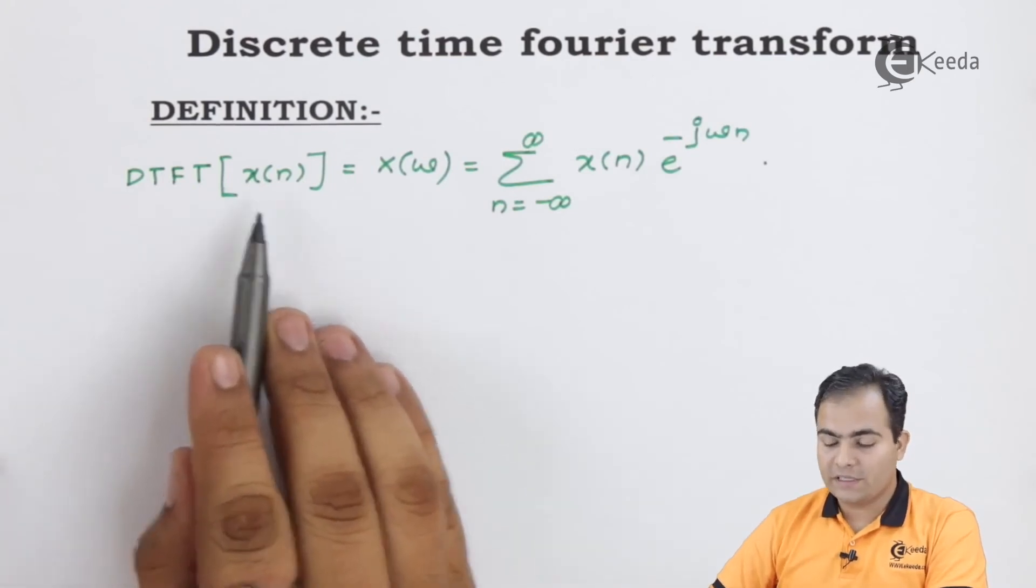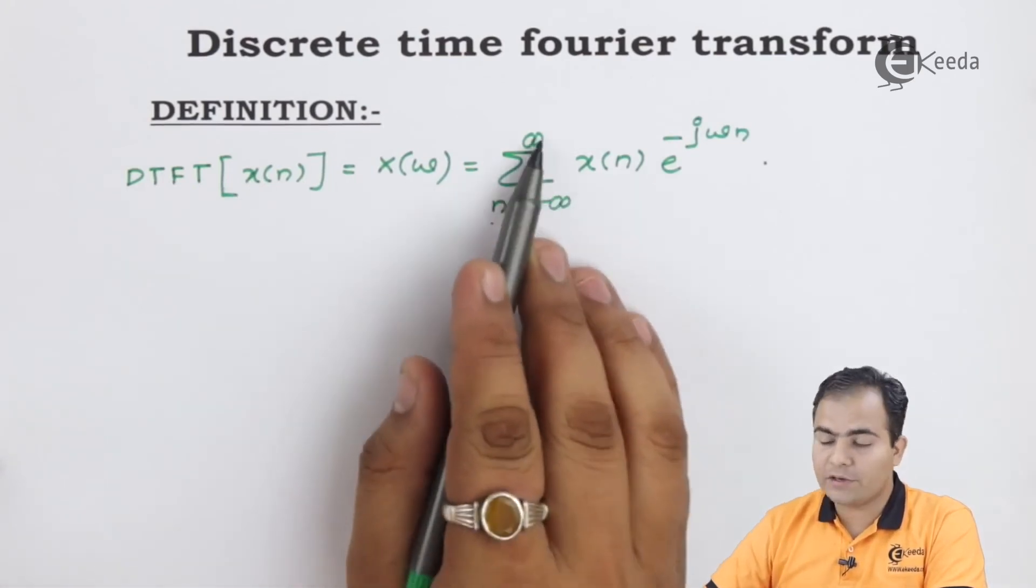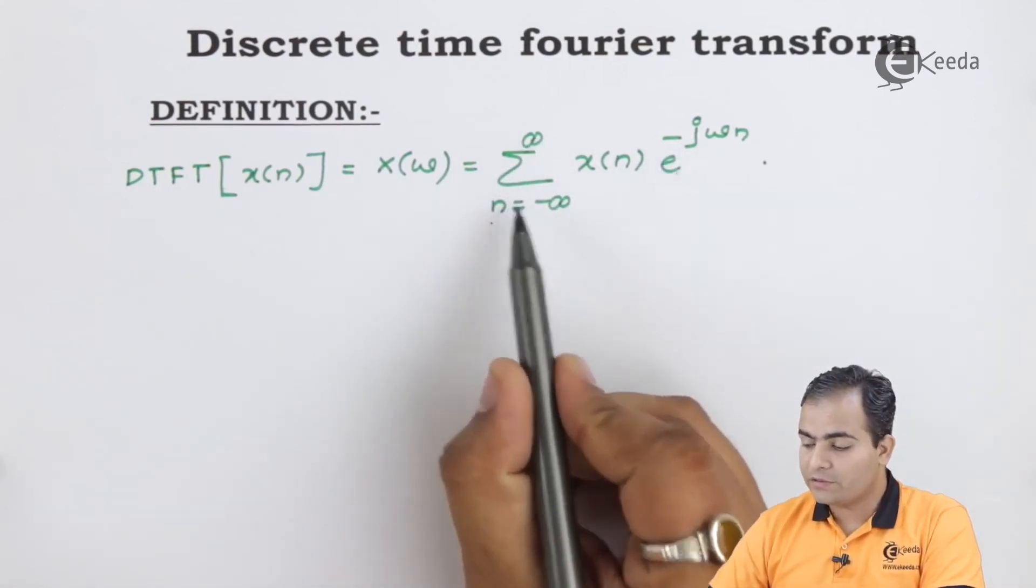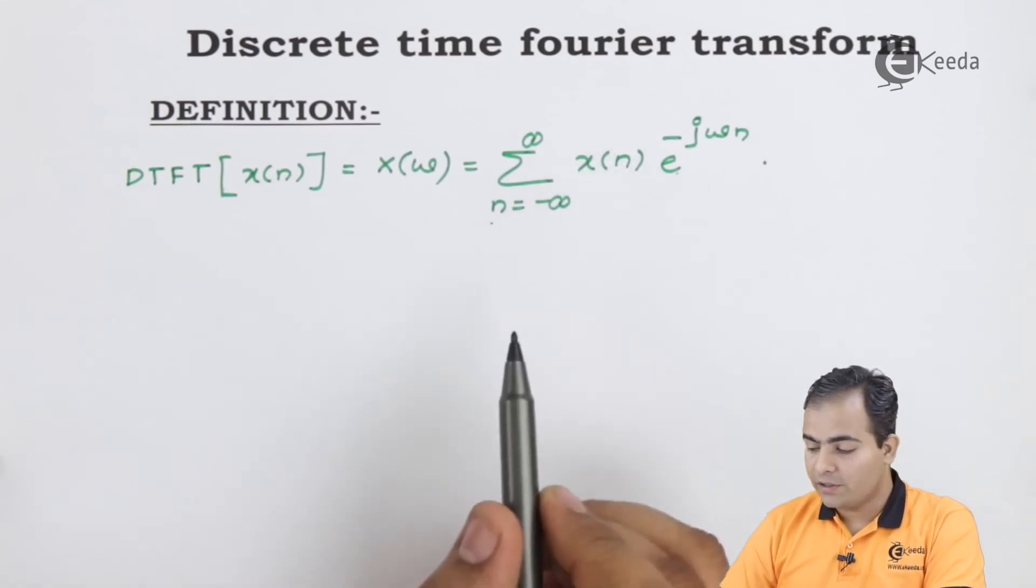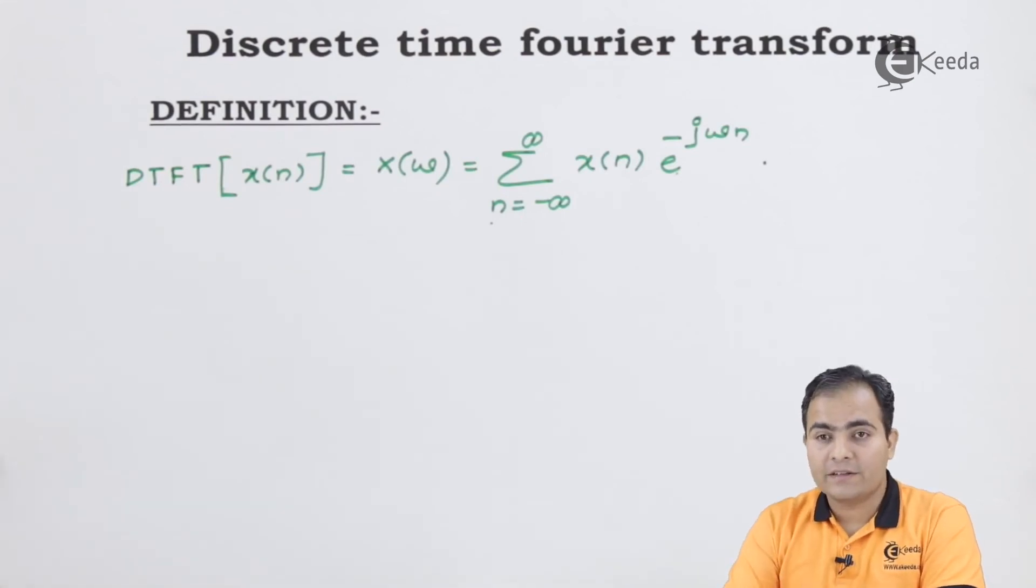DTFT of x of n is represented by x of omega and is given by summation n value varies from minus infinity to infinity, x of n e to the power minus j omega n. When we solve this equation after substituting the value of x of n, we get the answer. If we take e to the power's value common from the equation, we get two results: the first result is the magnitude and the second part gives us the phase of the given sequence.